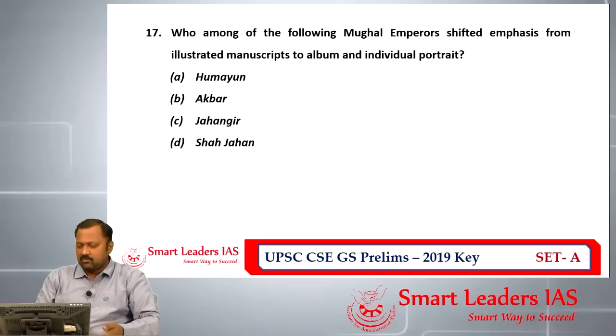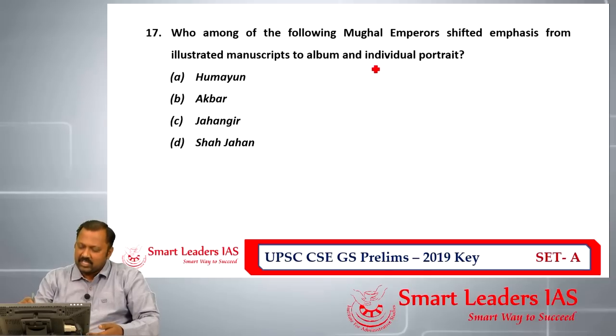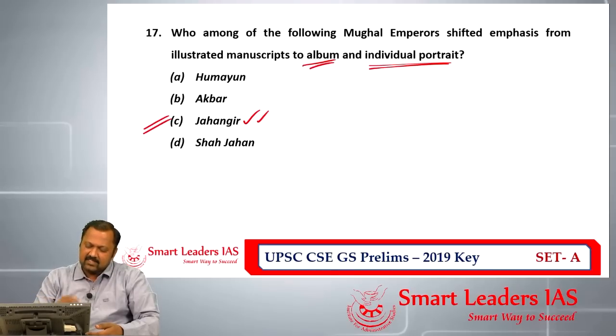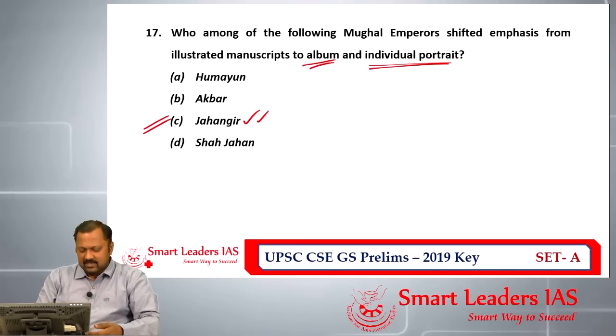Question number seventeen asks which Mughal Emperor shifted emphasis from illustrated manuscripts to albums and individual portraits. When it comes to individual portraits and albums, it is Jahangir. So the answer for question number seventeen is C.